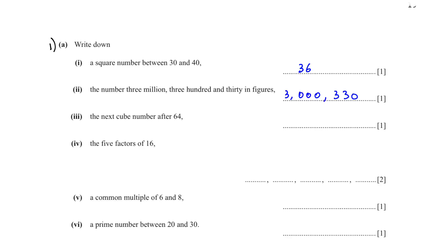The next cube number after 64 - we get 64 if you multiply 4 times 4 times 4, so the next cube number is going to be 5 cube which will be 125. The five factors of 16 - which numbers when we multiply we get 16? So 1 times 16, 2 times 8, and 4 times 4.